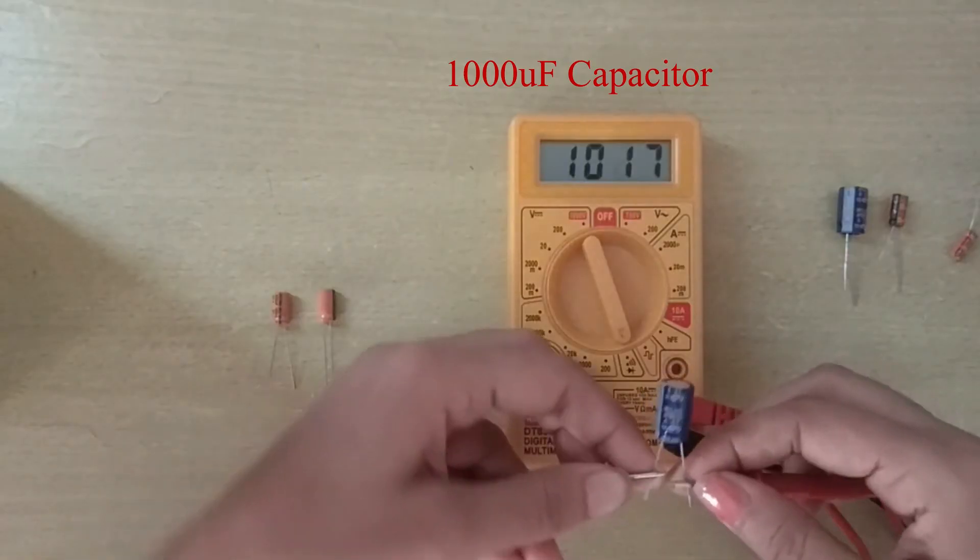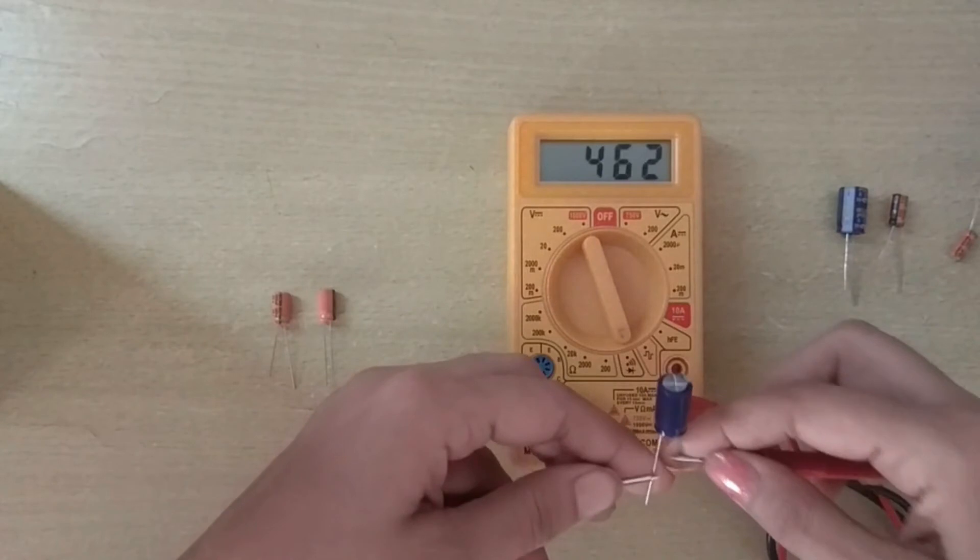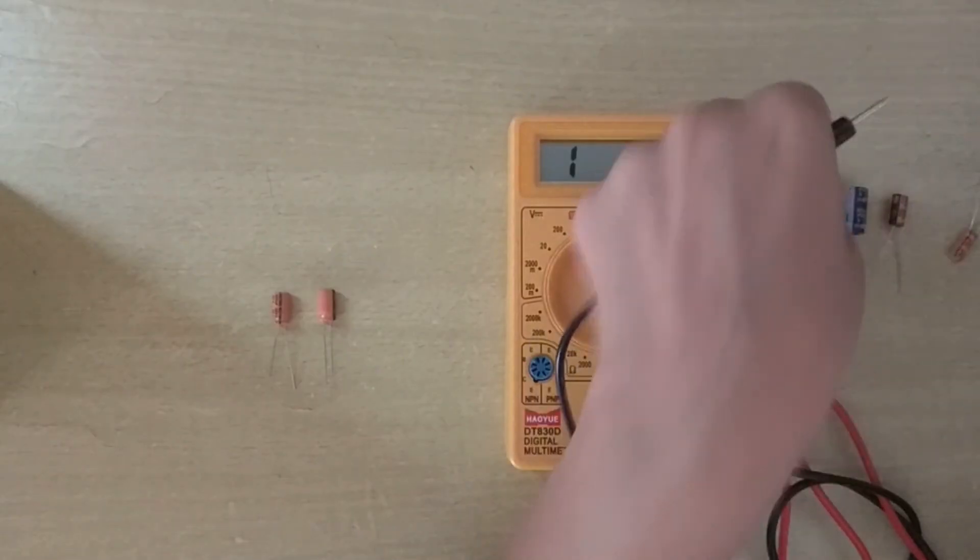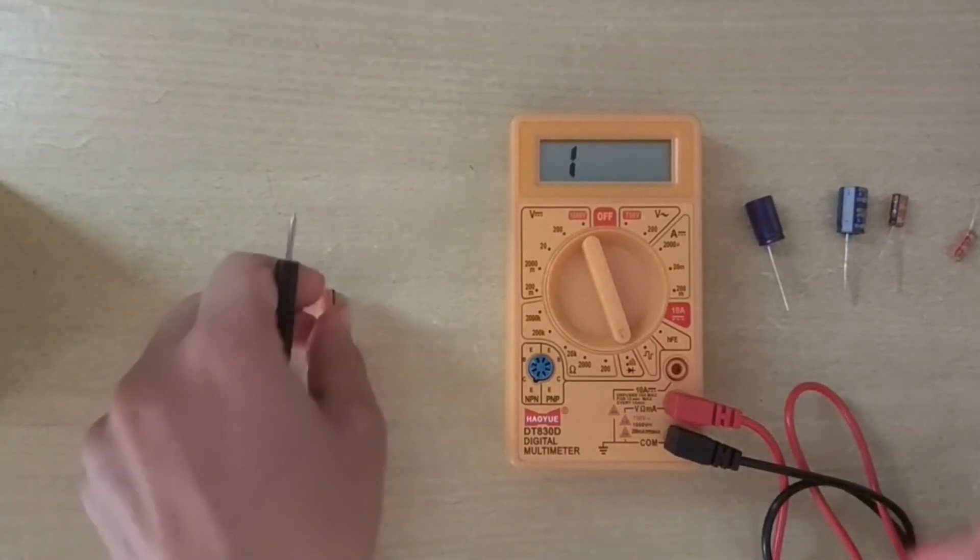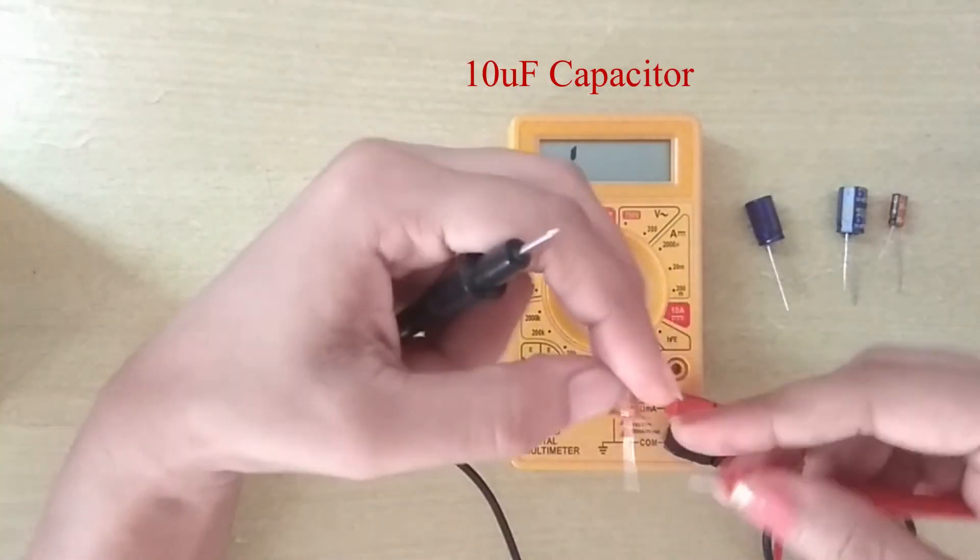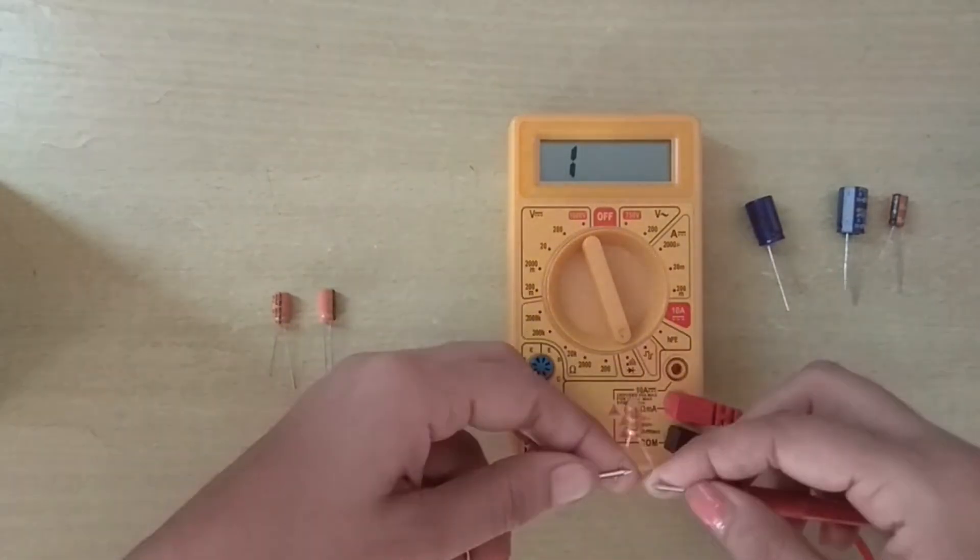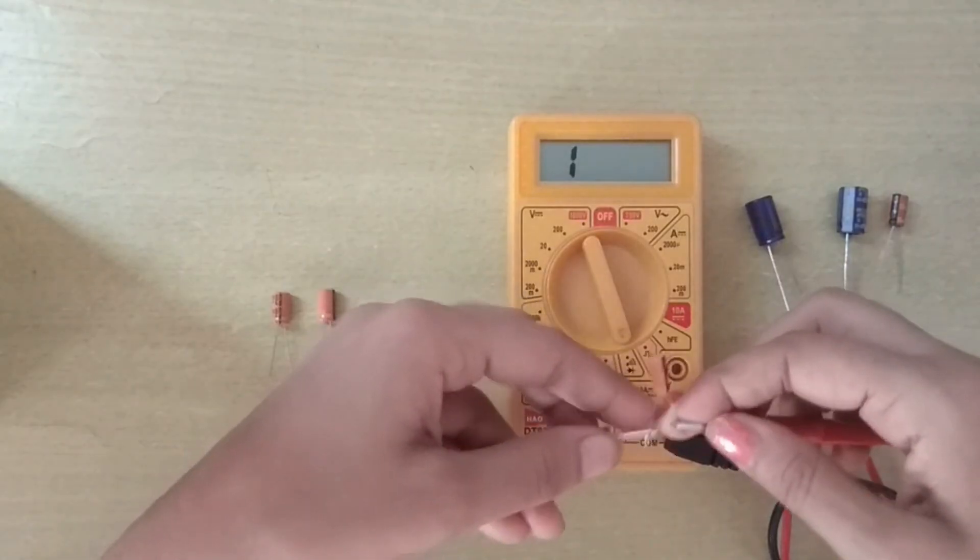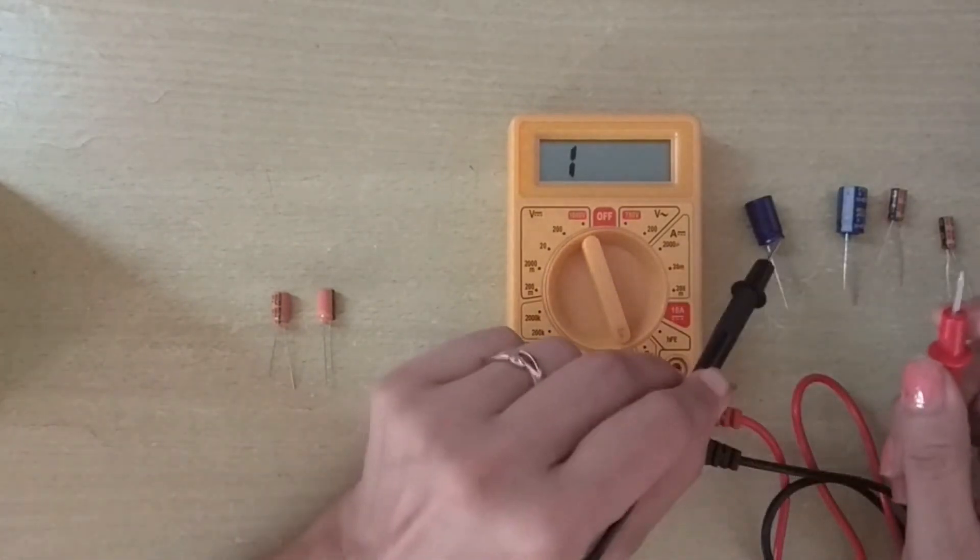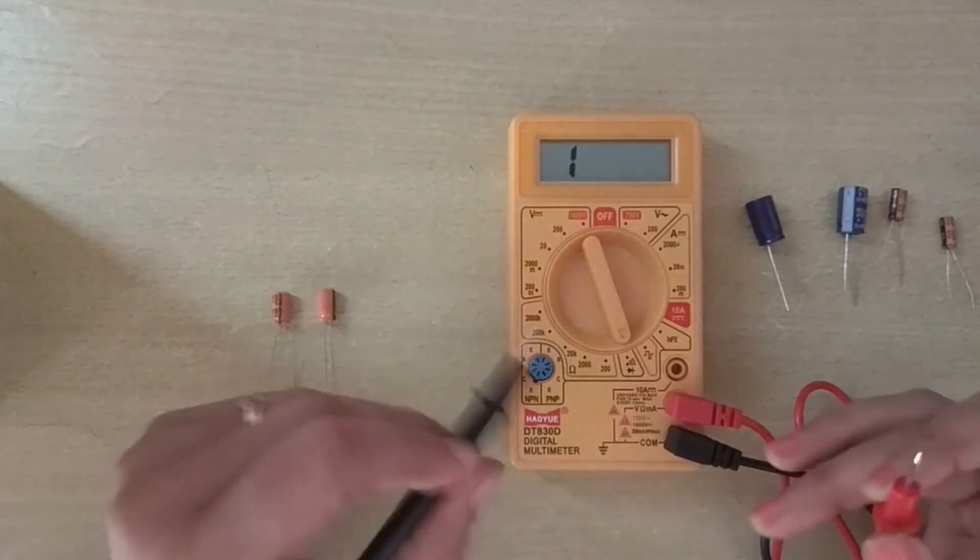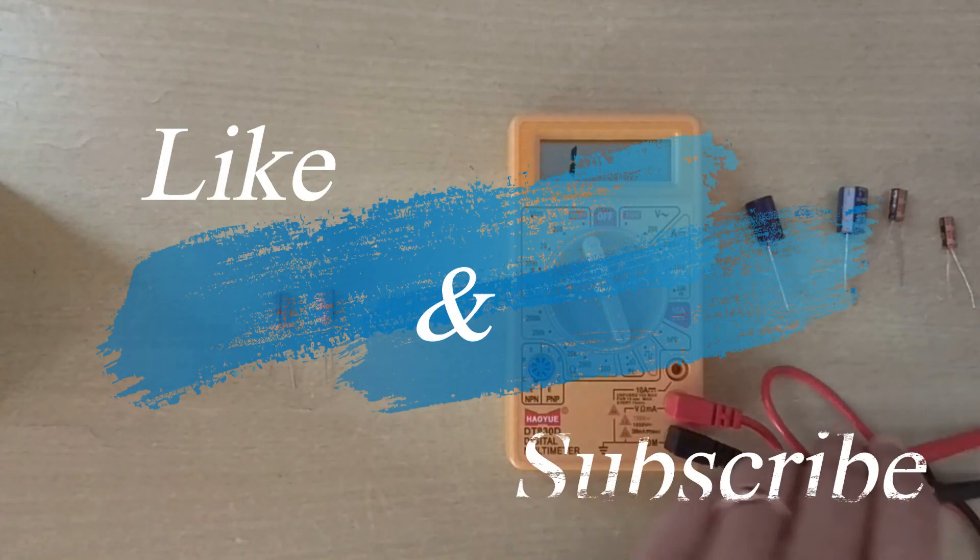Using continuity range, we can test high value capacitance, but for small value capacitors like this 10 microfarad capacitor, I'm not getting any reading. That means we can check high value capacitors using continuity range, but using resistance range we can check any value capacitor.